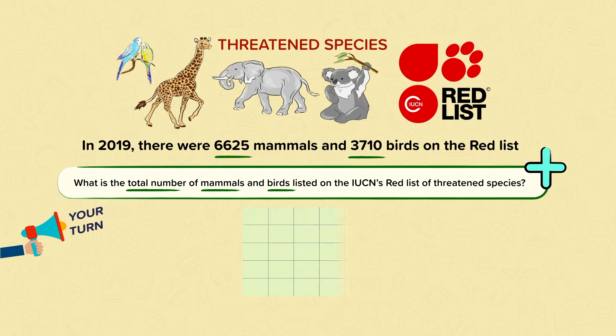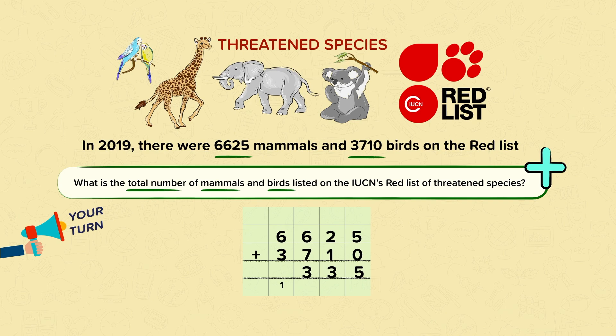You should have set out the calculation starting at the ones, then moved to the tens, then the hundreds. In the hundreds column, 6 add 7 is more than 9, so you exchange: 6 add 7 is 13, put the 3 in the hundreds column and exchange the 1 to the thousands. Then in the thousands: 6 add 3 add the exchanged 1 is 10. So your answer should have been 10,335. Well done if you got that correct.